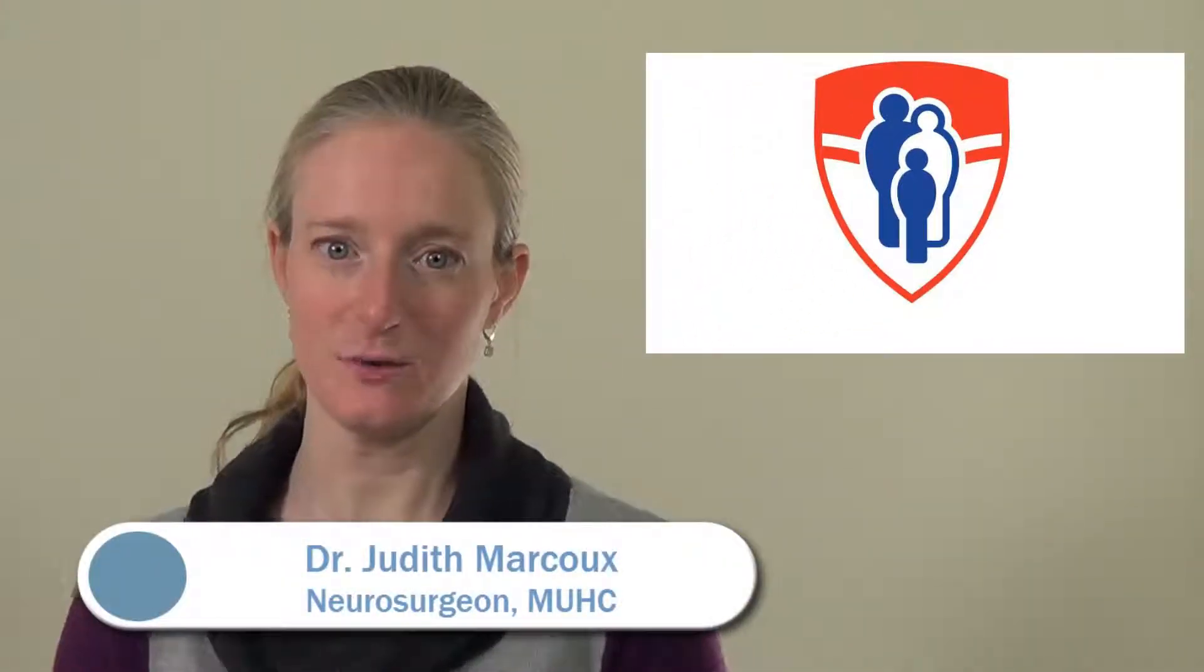Most of the time traumatic brain injury is mild, but sometimes the injury is more serious and is accompanied by hemorrhage in the head. A hemorrhage is a flow of blood outside the natural circulation. The blood can be found in different places in the head. Let me explain.